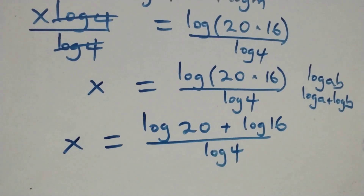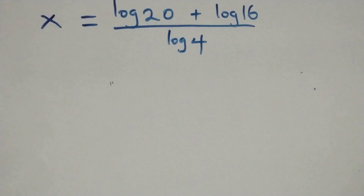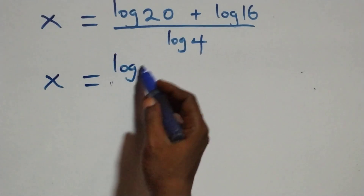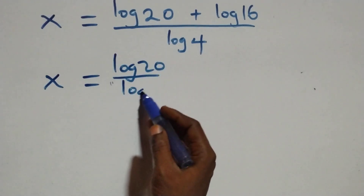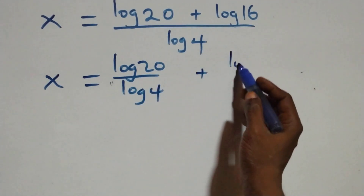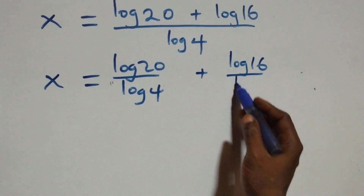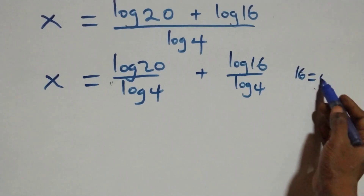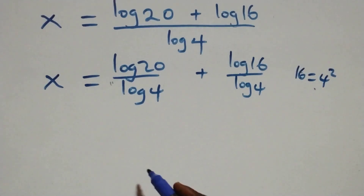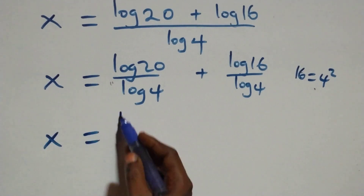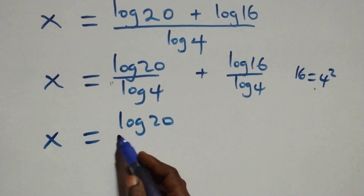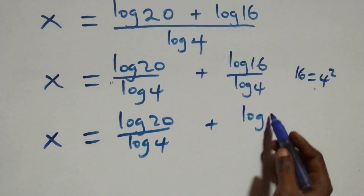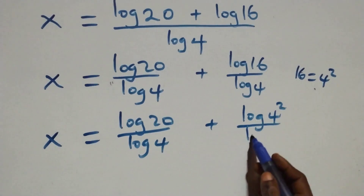We separate this into two fractions: x equals log 20 over log 4, plus log 16 over log 4. From here, we can write 16 as 4 times 4, which is 4 squared. So what we have becomes x equals log 20 over log 4, plus log of 4 squared over log 4.